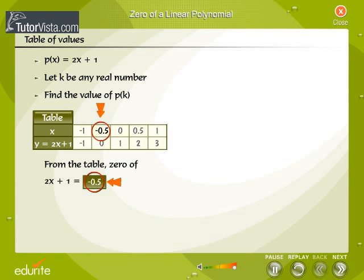A real number k is a zero of a polynomial p(x) if p(k) = 0.